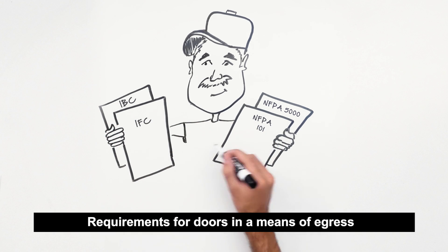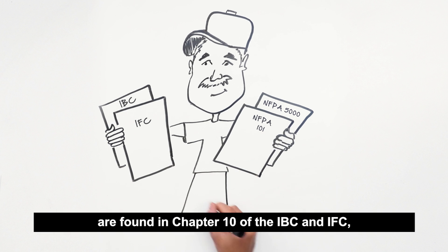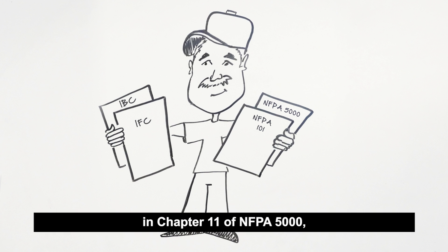Requirements for doors in a means of egress are found in Chapter 10 of the IBC and IFC, in Chapter 11 of NFPA 5000, and in Chapter 7 of NFPA 101. Here are some of the basic requirements for egress doors.